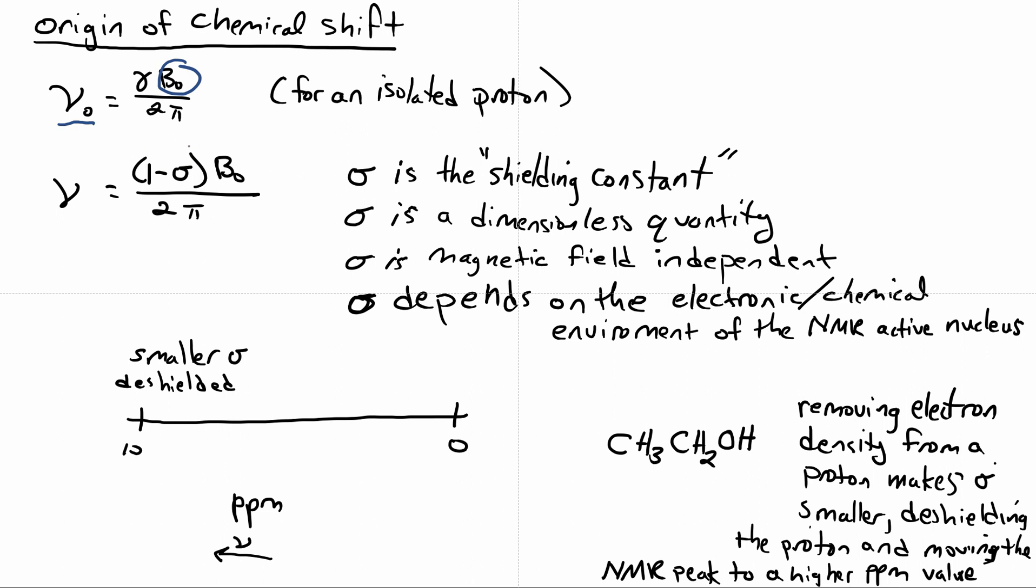And this sigma has nothing to do with a sigma bond like in organic or inorganic chemistry. This sigma is the shielding constant. And so it's going to modify the magnetic field term to account for the chemical environment. Sigma is a dimensionless quantity, sigma is magnetic field independent, and the value of sigma depends on the electronic slash chemical environment.